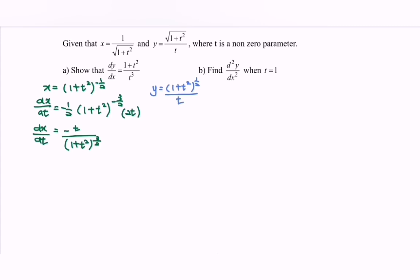Next, focus on y. Let's say we have u and v. Making use of the quotient rule, dy/dt is equal to the formula: v·u prime minus u·v prime, all over v squared.